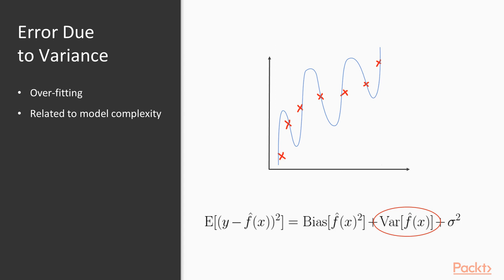Generally, as model complexity increases, variance becomes our primary concern. Notice in the image shown that a polynomial term has led to a very overfit model, where a simple logit function would have sufficed better. Unlike high bias problems, high variance problems can be addressed with more training data, which can help the model learn to generalize a bit better. Examples of high variance models, which we haven't yet covered, are decision trees and k-nearest neighbors, and both of those are ones that we're going to cover in this section.